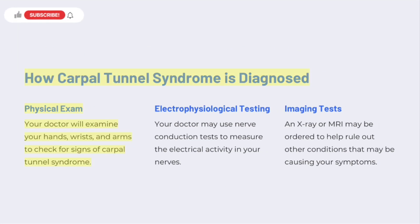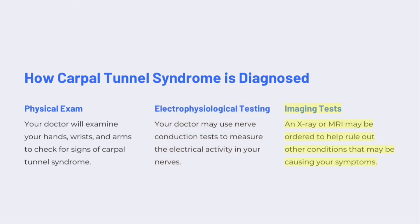How Carpal Tunnel Syndrome is Diagnosed. Physical Exam: Your doctor will examine your hands, wrists, and arms to check for signs of Carpal Tunnel Syndrome. Electrophysiological Testing: Your doctor may use nerve conduction tests to measure the electrical activity in your nerves. Imaging Tests: An X-ray or MRI may be ordered to help rule out other conditions that may be causing your symptoms.